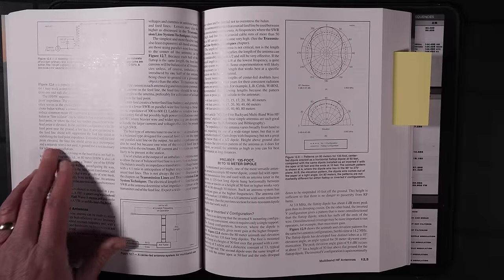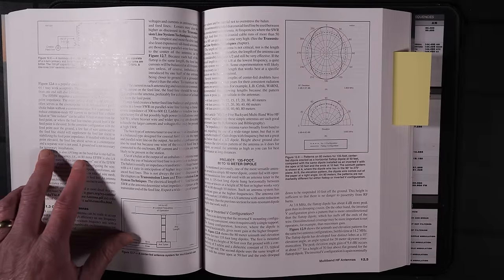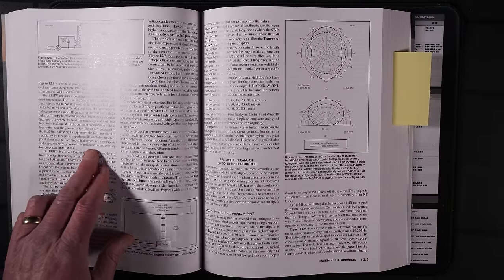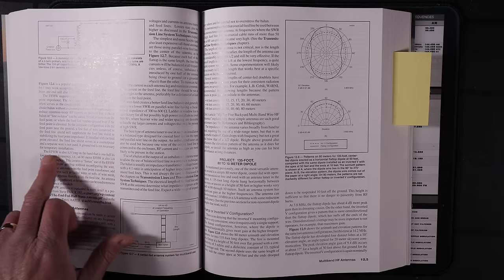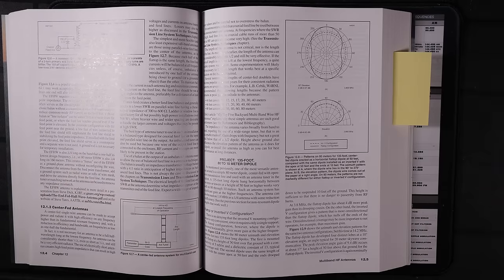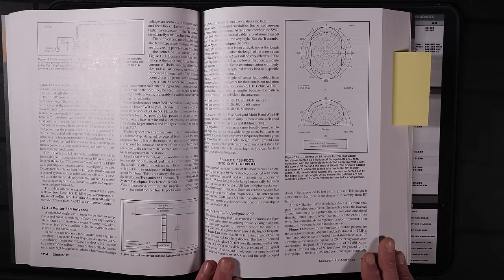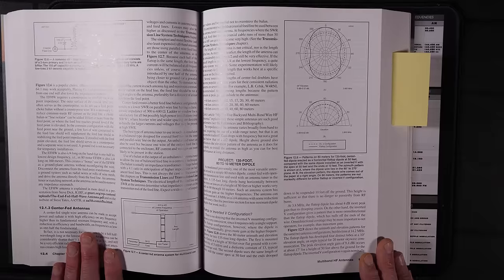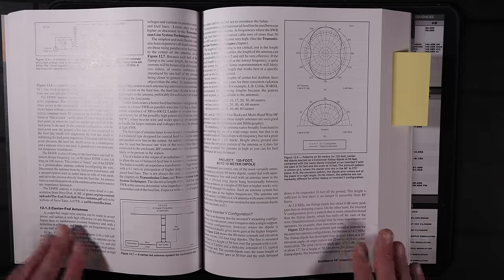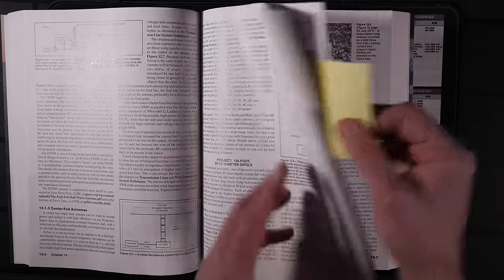If you do not use a feed point choke balance without a counterpoise wire, it is necessary to reduce common mode RF currents on the feed line. A choke balance or line isolator can be added 10 or more feet from the feed point, where the feed line reaches ground level that the feed point is elevated. In the common configuration with the feed point near ground, a few feet of wire connected to the feed line shield will supplement the feed line shield from stabilizing feed point impedance. If installed with the feed point elevated, the feed line shield serves as a counterpoise itself, and a separate wire is not used. A ground rod is not necessary for temporary installation. So, really good advice there for your NFED HalfWave antenna.